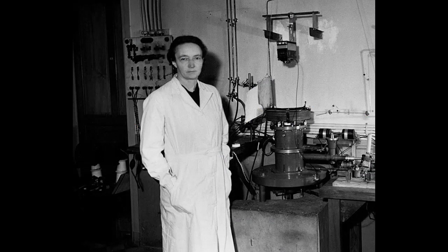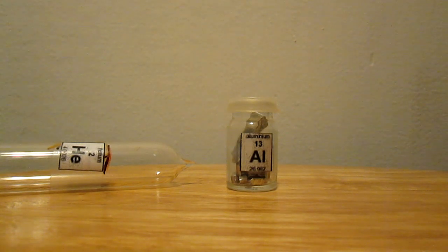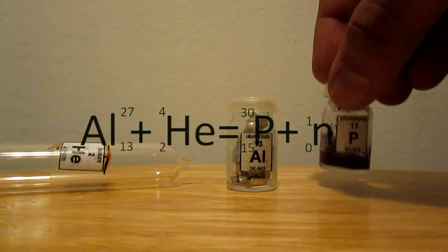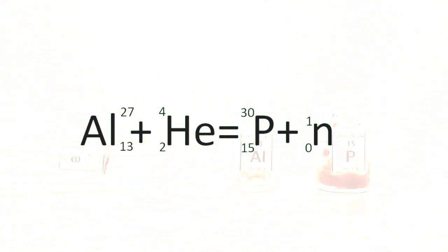This is the nuclear reaction Irene Joliot-Curie discovered in January 1934. The leftover from this intense bombardment is phosphorus-30 with a half-life of about 2 minutes.